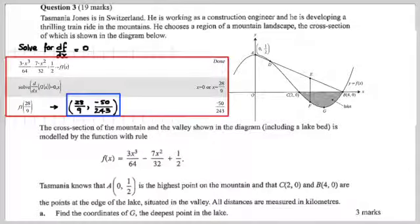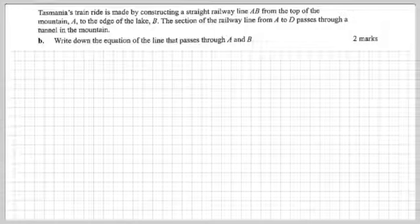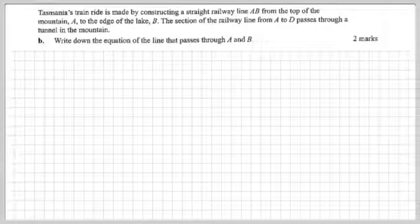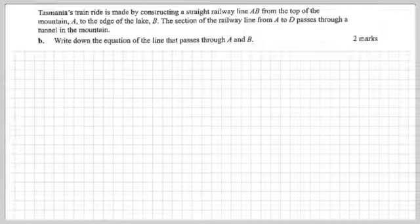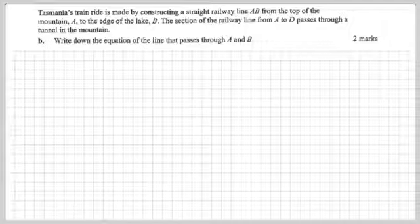Well, we're off to a great start, aren't we? Alrighty, next bit. Now, Tasmania's train ride is made by constructing a straight railway line AB from the top of the mountain A to the edge of the lake at B. The section of the railway line from A to D passes through a tunnel in the mountain. Write an equation of the line that passes through A and B.